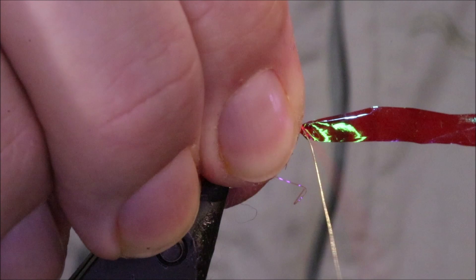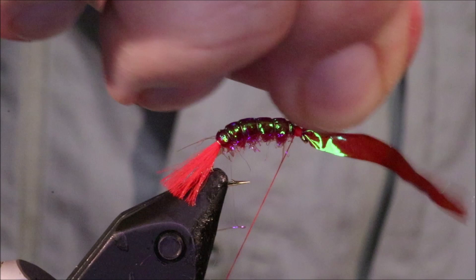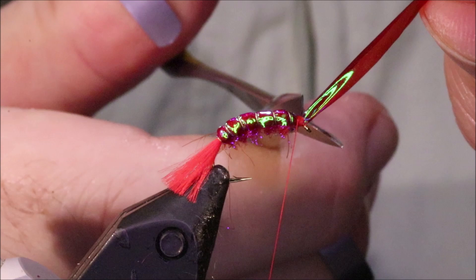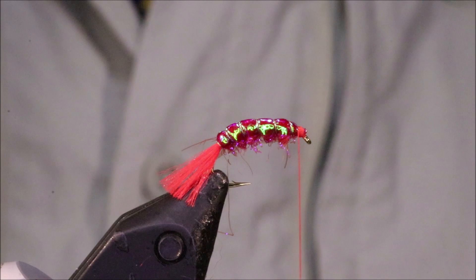Get that tied on nice and secure, start to build a bit of a head. Bend and break that away, and come in, trim that nice and close. Set that aside in the hackle plier for the next fly.